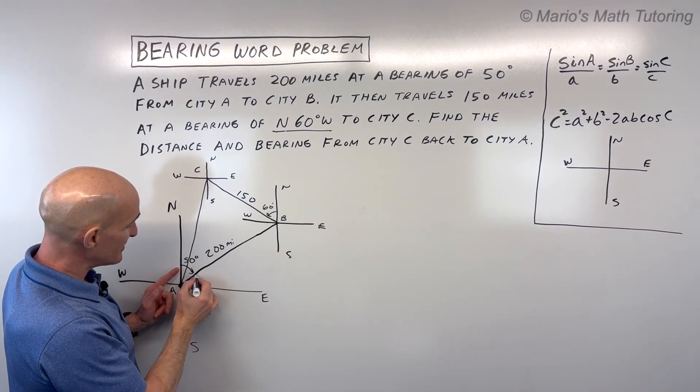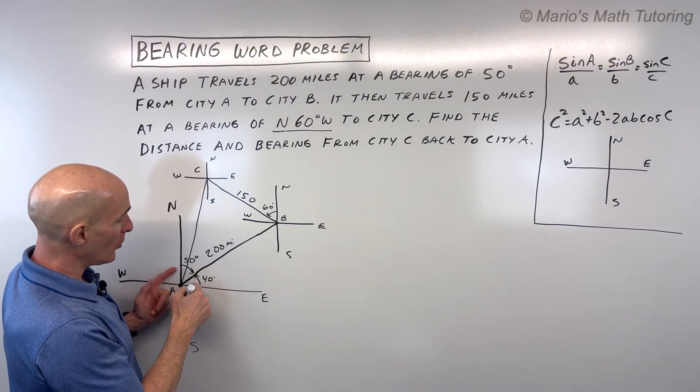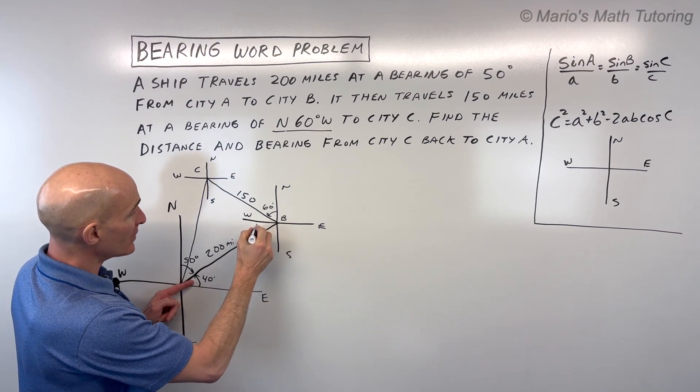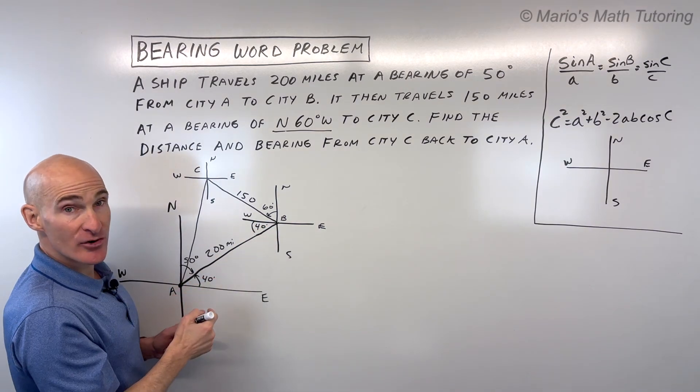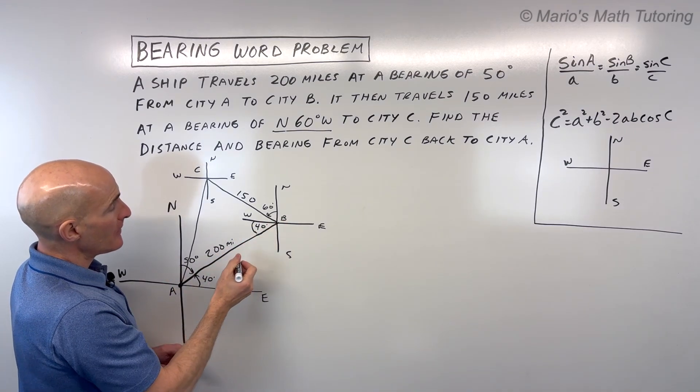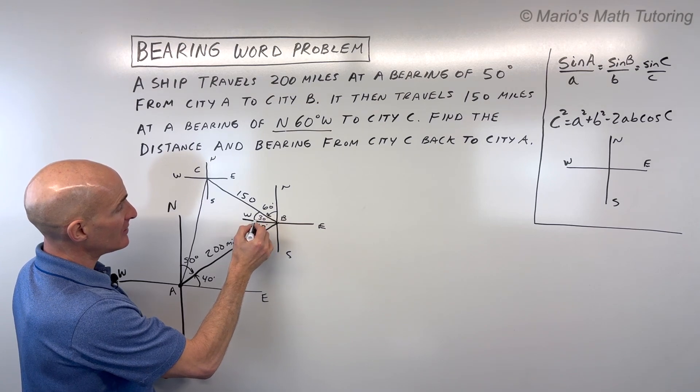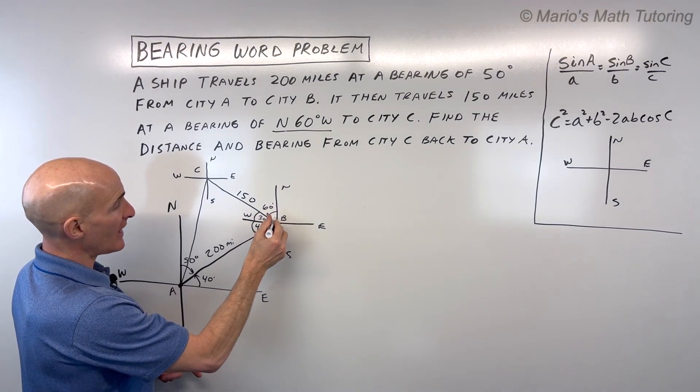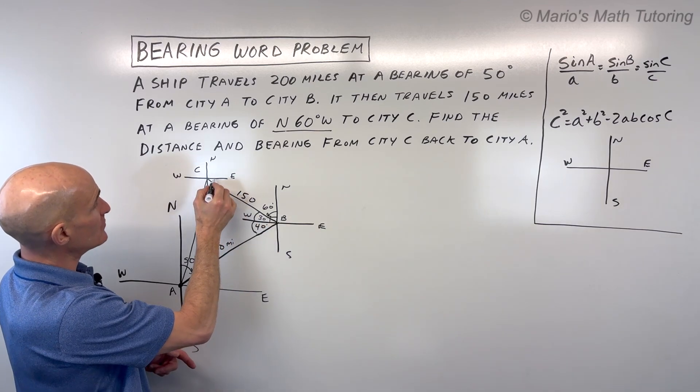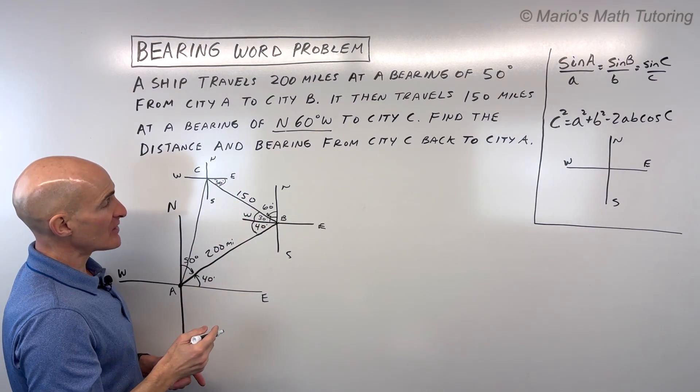See, if this is 50 degrees, this angle here would be 40 degrees because that's a 90-degree angle. And if this is 40, this angle here is 40 degrees because these guys are alternate interior angles. See the parallel lines cut by the transversal? If this is 60, this angle here has to be 30 because this forms a right angle here. And if this is 30, this would be 30 right here. Those are alternate interior angles. And so you can work through the diagram finding these missing angles.